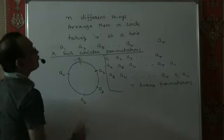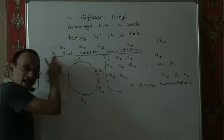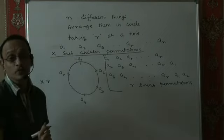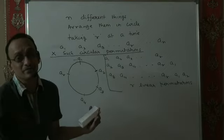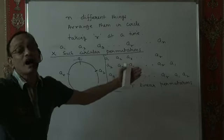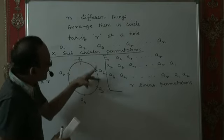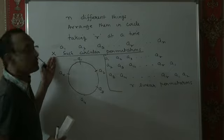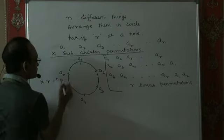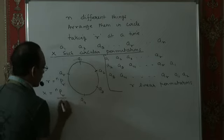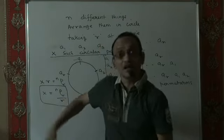Which means for each one of these circular permutations I would have got R linear permutations. So for x such circular permutations, the linear permutations would have been x times R, and that would essentially have been the number of linear permutations of n different things taken R at a time — that is, nPr. So then x would have been nPr divided by R.